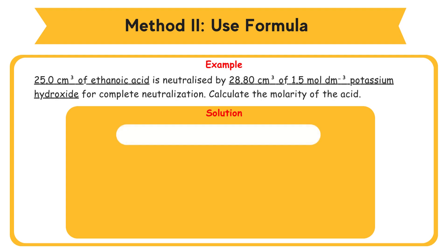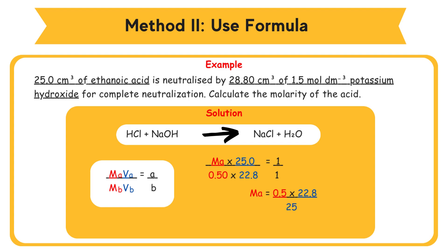Solution: Neutralization equation: HCl react with NaOH to become NaCl + H2O. Use the formula: MAVA/MBVB = a/b. MA × 25.0 / (0.50 × 22.8) = 1/1. MA = 0.5 × 22.8 / 25 = 0.46 mol/dm³.